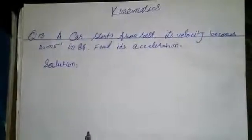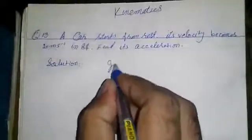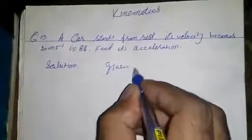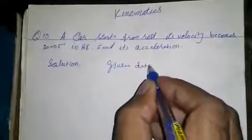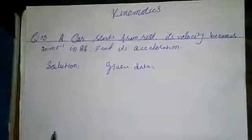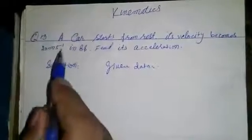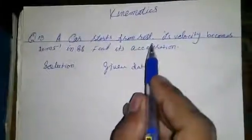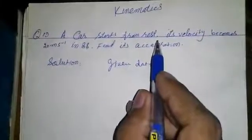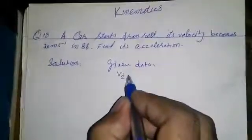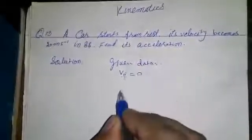First of all, we write the given data. When something starts from rest, its initial velocity will be 0, so its initial velocity Vi is equal to 0.